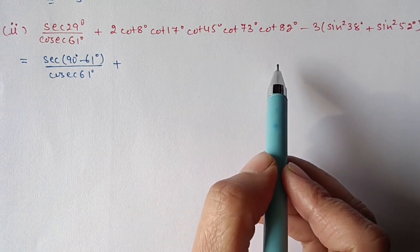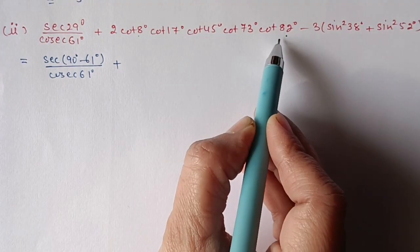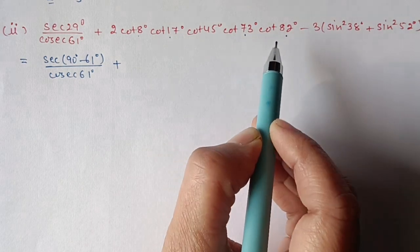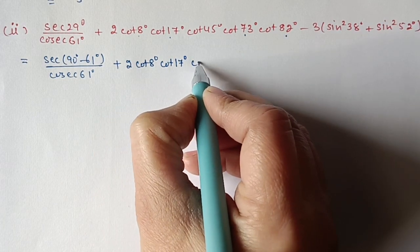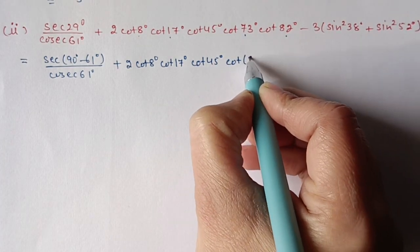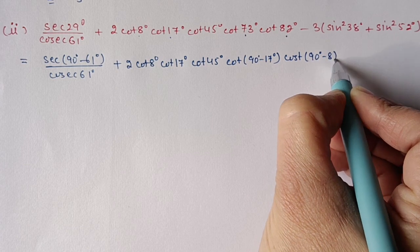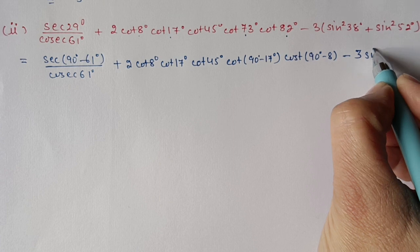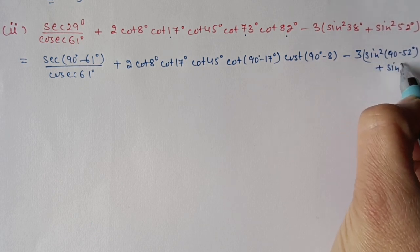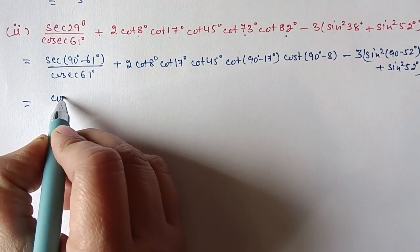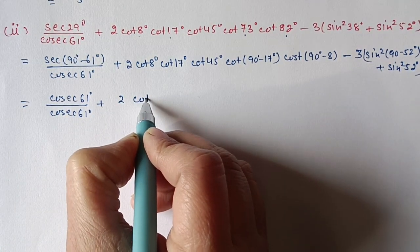Now here we have five cot terms, so we will see which two are complementary. 8 and 82 are complementary, so we will change any one from these two. 17 and 73 are complementary, so from these two also we will change any one. cot8 as it is, cot17 as it is, cot45 as it is, cot73 I can write as cot(90−17), and cot82 I can write as cot(90−8). From sin²38 and sin²52, sin²38 we can write as sin²(90−52) and sin²52 as it is.